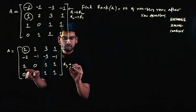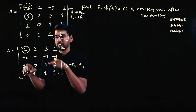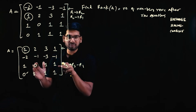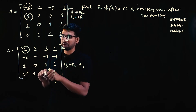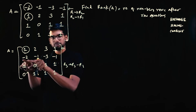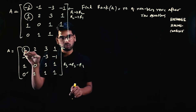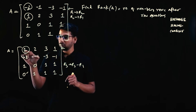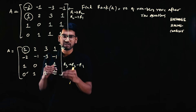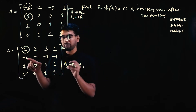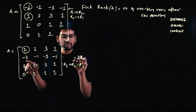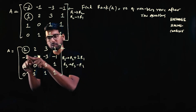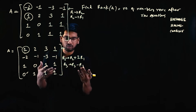After the row exchange, the first element of row 1 is 1. We use it to make the element in row 2 zero. Since row 2 starts with -2, we do R2 = R2 + 2*R1: minus 2 plus 2 times 1 is 0. For R3 = R3 - R1: 1 minus 1 is 0.